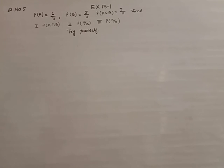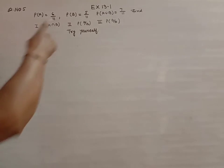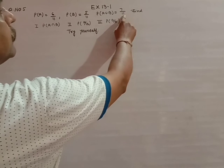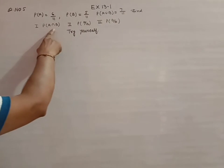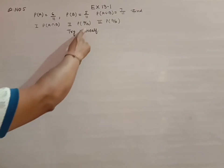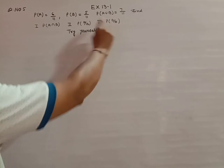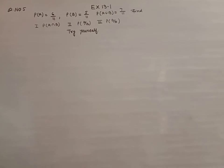Question 5: P(A) = 6/11, P(B) = 5/11, and P(A union B) = 7/11. Find P(A intersection B), P(A|B), and P(B|A). Please try this yourself. If you cannot solve it, then I will make a video and send it to you.